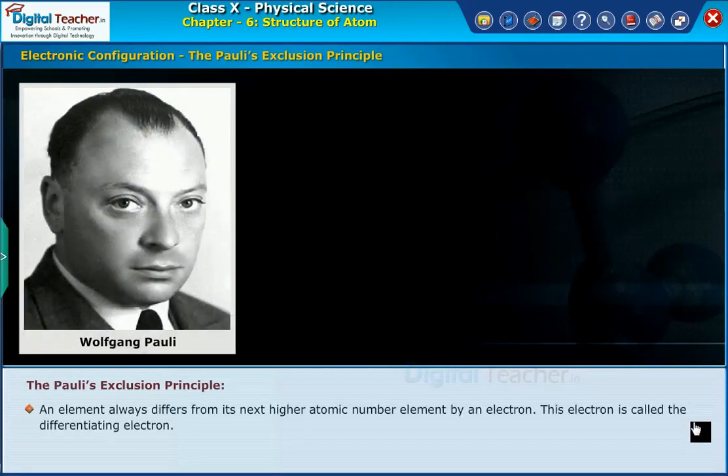The Pauli's exclusion principle. An element always differs from its next higher atomic number element by an electron. This electron is called the differentiating electron.